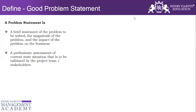Moving on, another thing we need to keep in mind is that a problem statement is a preliminary assessment of the current state situation, which is to be validated by the project team or the stakeholder. A problem statement is a brief statement of the problem to be solved, including the magnitude, the gravity, the quantum of the problem, and the impact of the problem on the business.